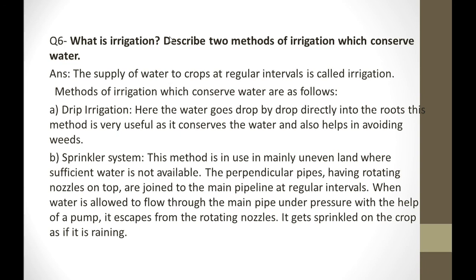The next question is: what is irrigation? Describe two methods of irrigation which conserve water. In traditional methods, water is wasted, so we move to modern methods which are safer and conserve water. Irrigation is the supply of water to the crops at regular intervals.